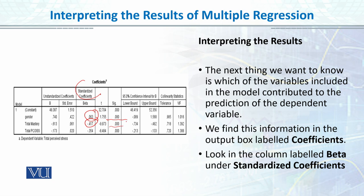Total mastery has a standardized beta of minus 0.417, making it a significant negative predictor — meaning if total mastery is higher, perceived stress will be lower. Similarly, total PCOIS is also a significant negative predictor: if perceived control is more, perceived stress decreases. Both of these independent variables are significant predictors.